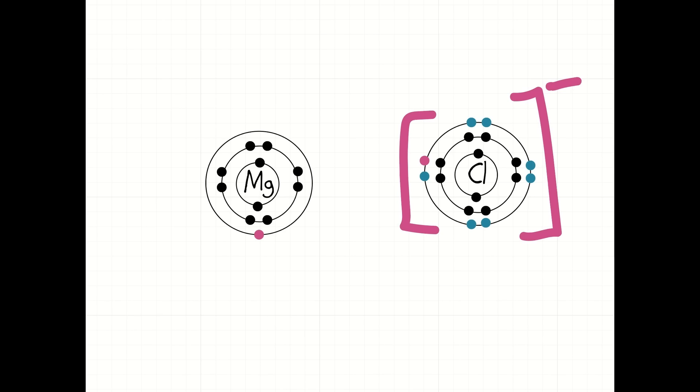Now, magnesium has one electron left. So, what does it do with that second electron? What happens is we get another chlorine atom.